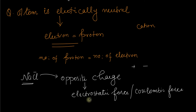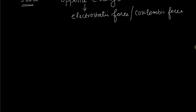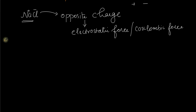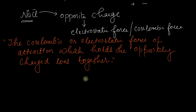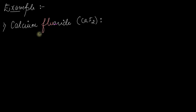Moving on to another example: CaF2, calcium fluoride. Let's see how the ionic bonds are formed in calcium fluoride. Calcium has atomic number 20, so let's write its electron configuration.